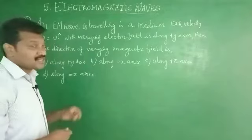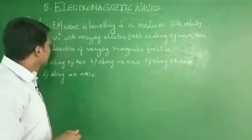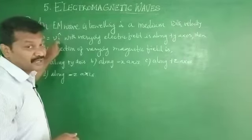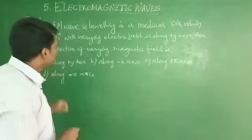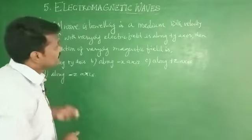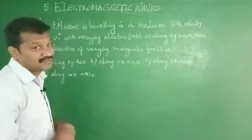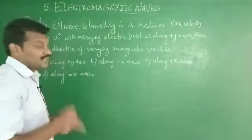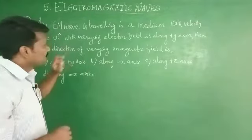Electromagnetic wave is traveling in a medium with velocity V equal to V i cap. That is V equal to V i cap. The varying electric field is along positive Y axis. Then what is the direction of varying magnetic field?